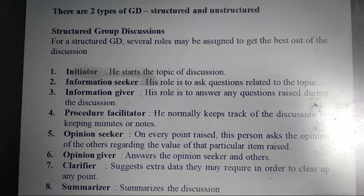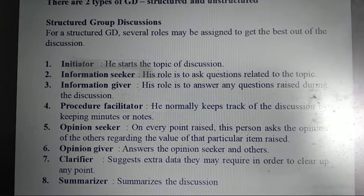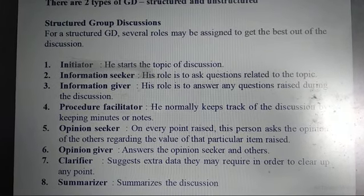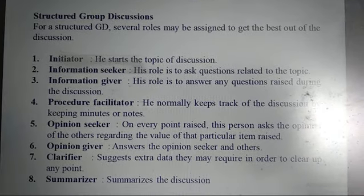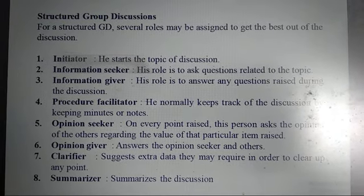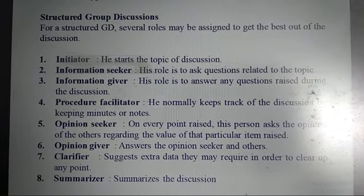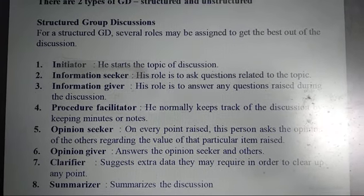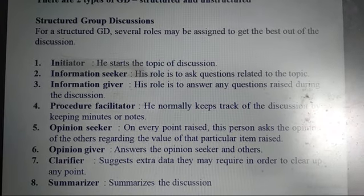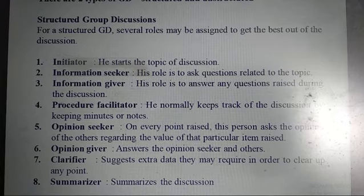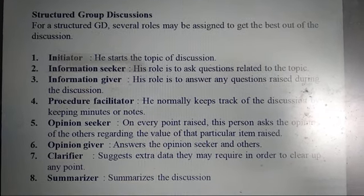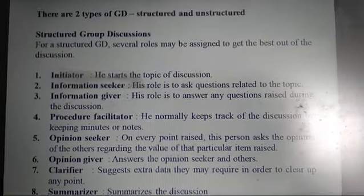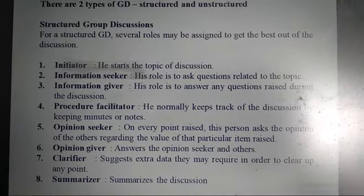The Clarifier is an important role. And the last one is the Summarizer — he summarizes the discussion. So the roles are: Initiator, Information Seeker, Information Giver, Procedure Facilitator, Opinion Seeker, Opinion Giver, Clarifier, and Summarizer. These are the several roles that take place in a Structured Group Discussion.